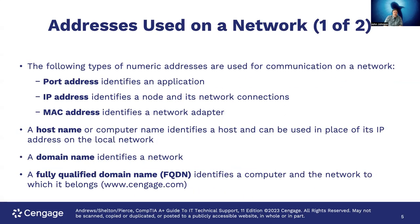Addresses used on a network: the following types of numeric addresses are used for communication. You've got the port address that identifies an application — like port 80, port 25, port 3889 — different ports that signify commonly used ports for applications. There's also the IP address, which is the number that identifies a node and its network connections, such as 192.168.1.1 or 10.0.0.1.